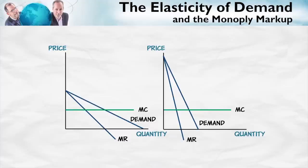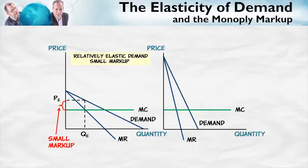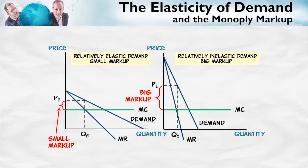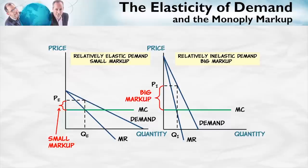We know how to find the profit-maximizing prices and quantities, so let's do that starting on the left. When the demand curve is relatively elastic, we get a small markup of price over marginal cost. On the right, with a relatively inelastic demand curve, price rises well above marginal cost — we get a big markup. Notice the marginal cost for these two markets is the same. What differs is that the demand curve on the right is more inelastic. The monopolist sees that consumers are insensitive to price, so it knows that if it raises price, the quantity demanded will fall by only a little. Therefore, an increase in price will increase the monopolist's profits — so the monopolist will increase the price and you get a big markup of price over marginal cost.